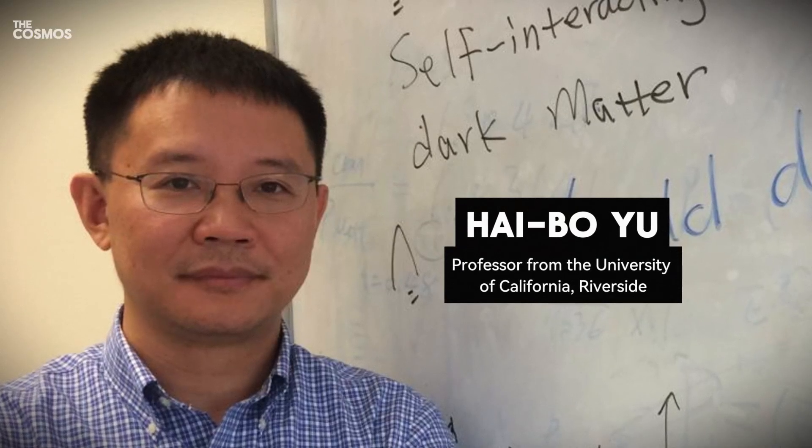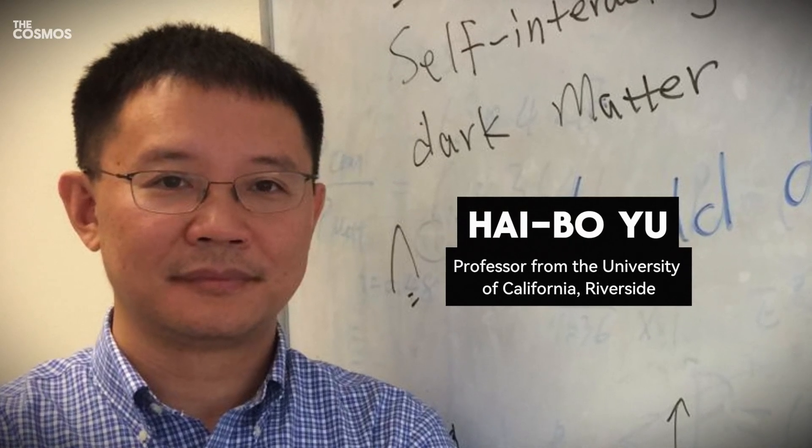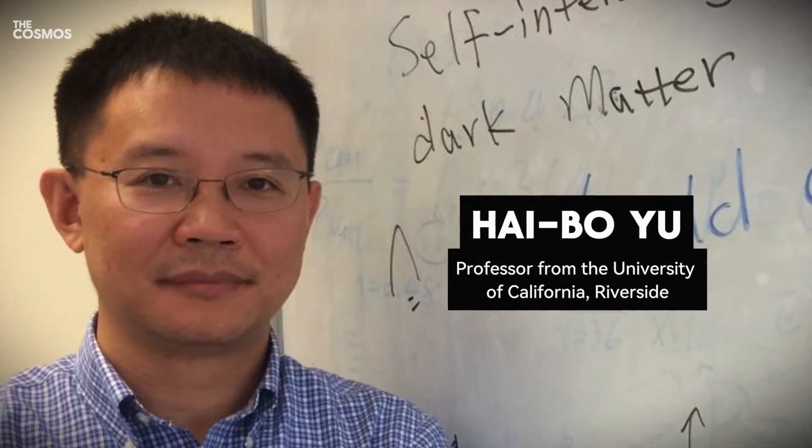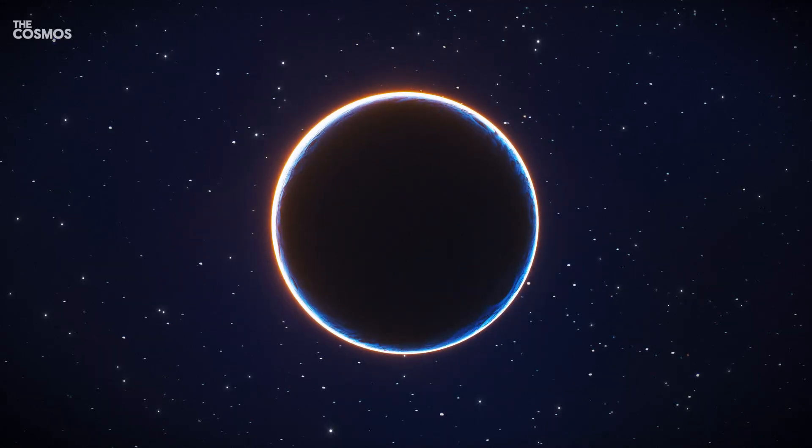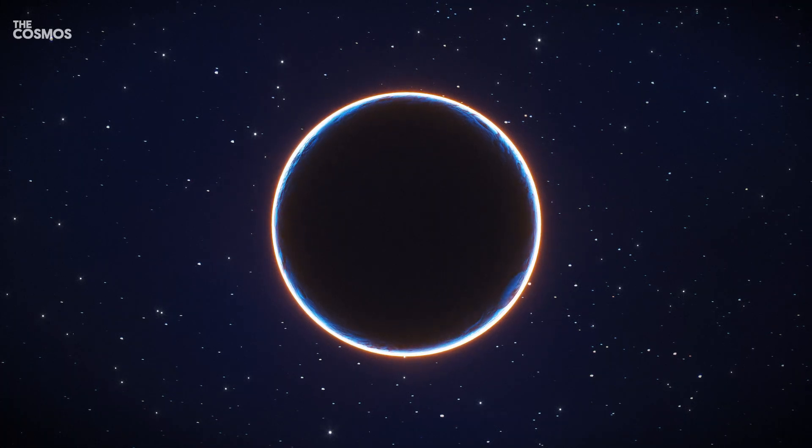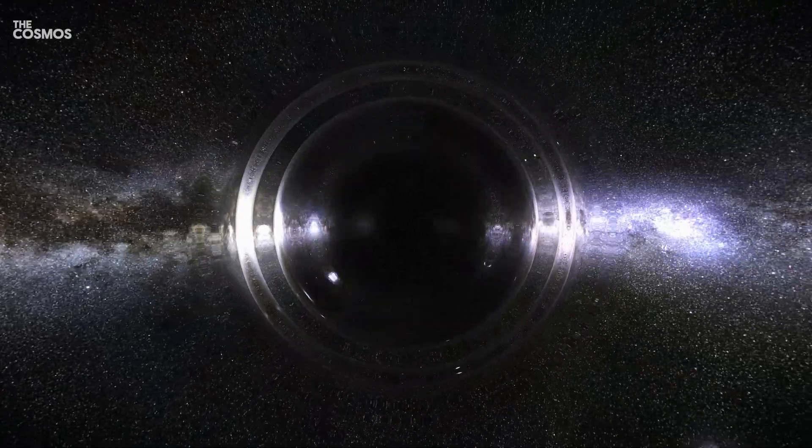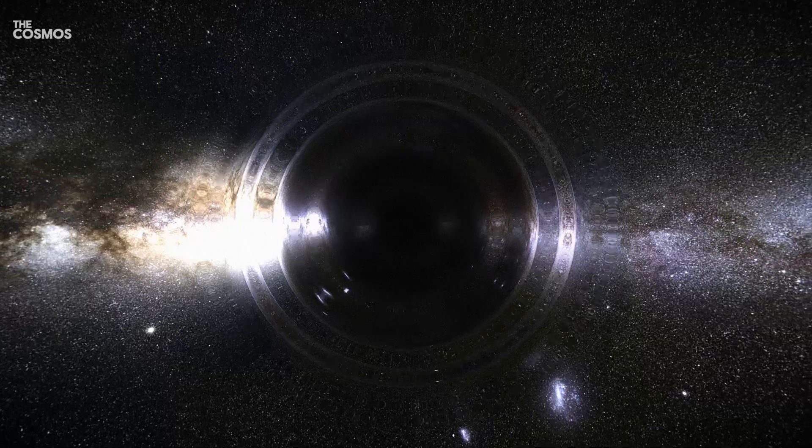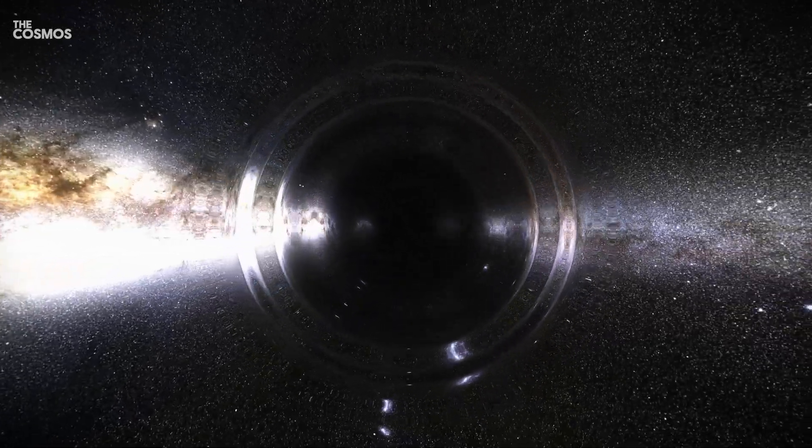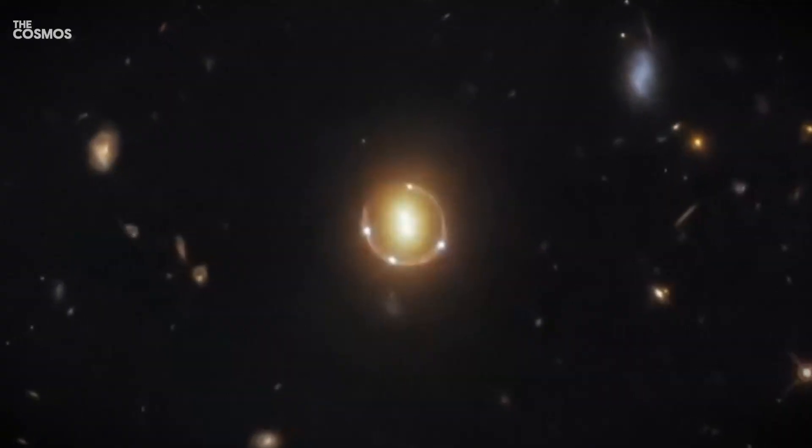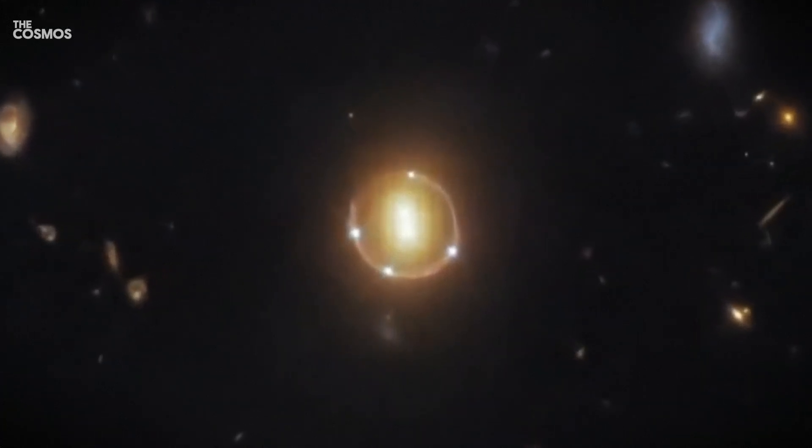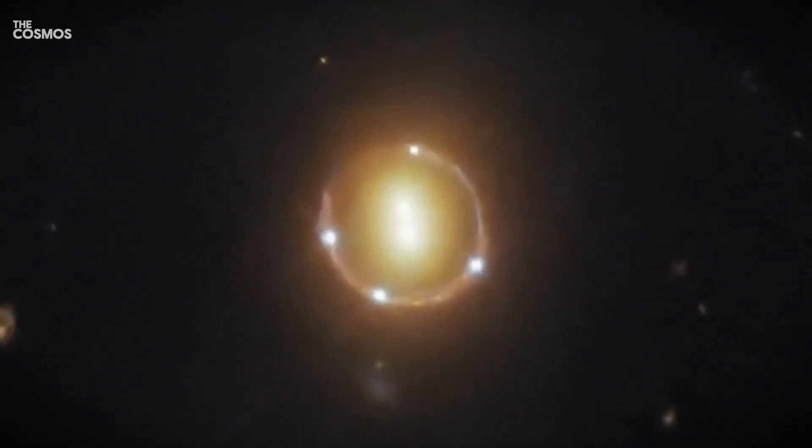Professor Haibo Yu from the University of California, Riverside explains the significance of this observation. The mass creating this gravitational lensing effect consists of two main components: the stellar mass, which includes all the stars within the galaxy, and the dark matter mass, which remains unseen. By calculating the total mass within the Einstein ring and subtracting the stellar mass, astronomers can estimate the amount of dark matter present.